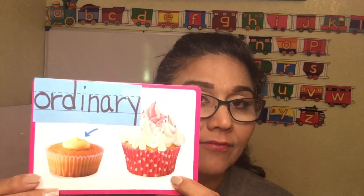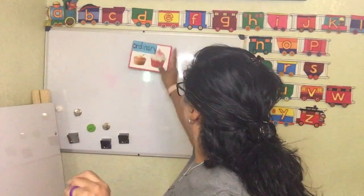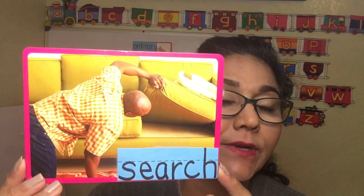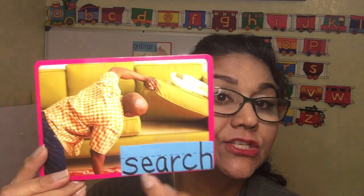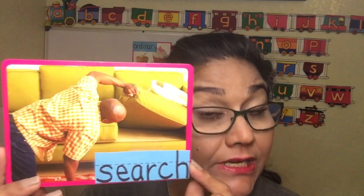On this side we have, well, probably fancy — but this word is 'ordinary.' Can you say ordinary? Ordinary. Ordinary starts with the letter O. And 'search' — search starts with the letter S. This guy is searching; it looks like he's searching under the couch.